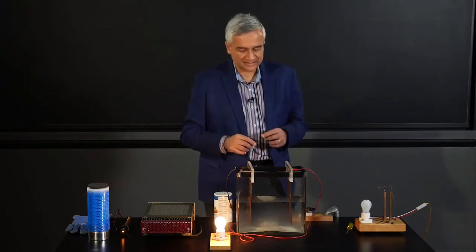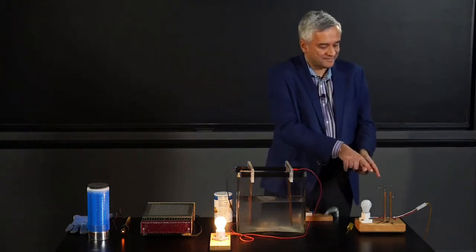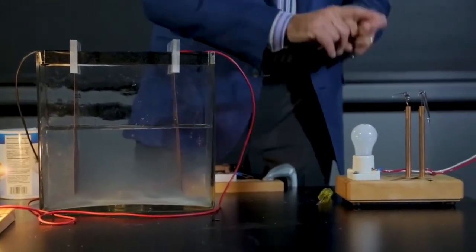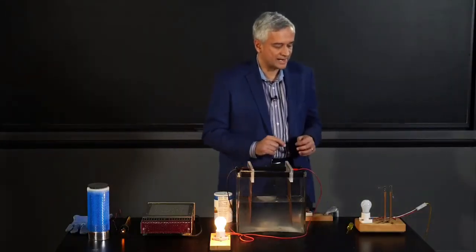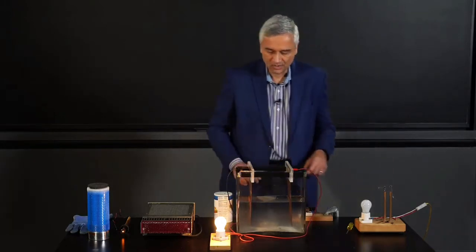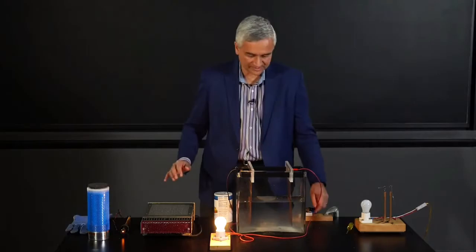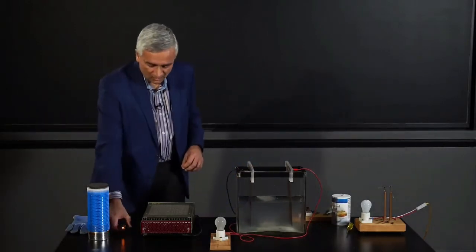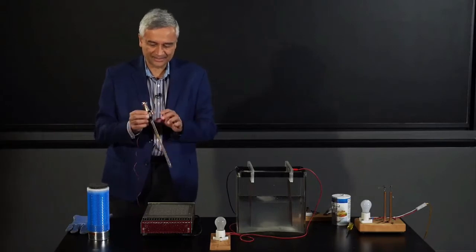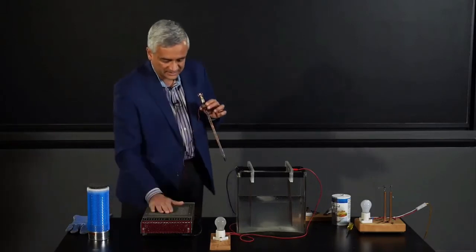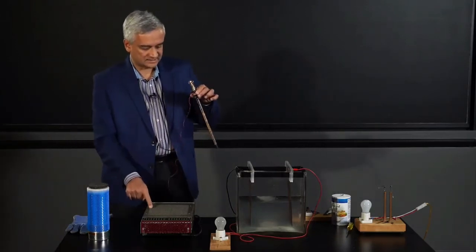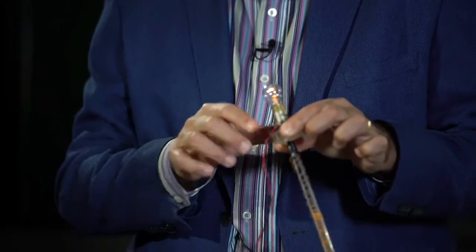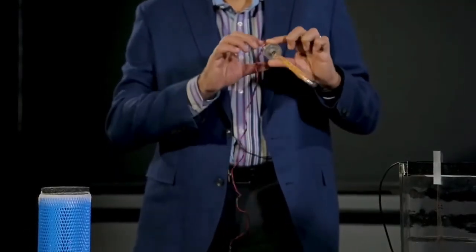The third experiment is to convince you that this is not simply about temperature. From the previous experiments you might think: heat something up and it becomes a conductor, cool something down and it becomes an insulator. I want to show that's the wrong lesson — the right lesson has to do with charge carriers. This is a battery sending current through a light bulb, which you can see is glowing with a feeble glow. The electricity goes through about 10 meters of fine copper wire coiled on this post before reaching the bulb, which is why the current is low and the bulb is dim.